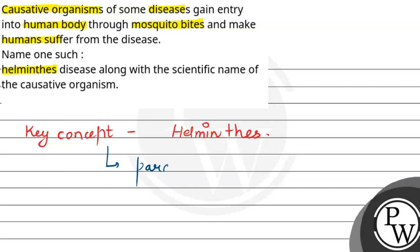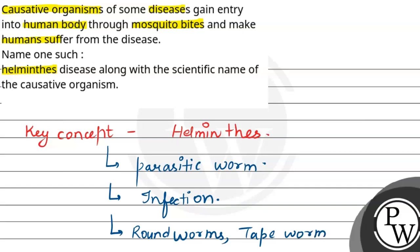They are parasitic worms which are responsible for causing disease. Helminthes are parasitic worms which cause infections in humans. Several types of helminthes including roundworms, which means nematodes, then we have tapeworms which we call cestodes.